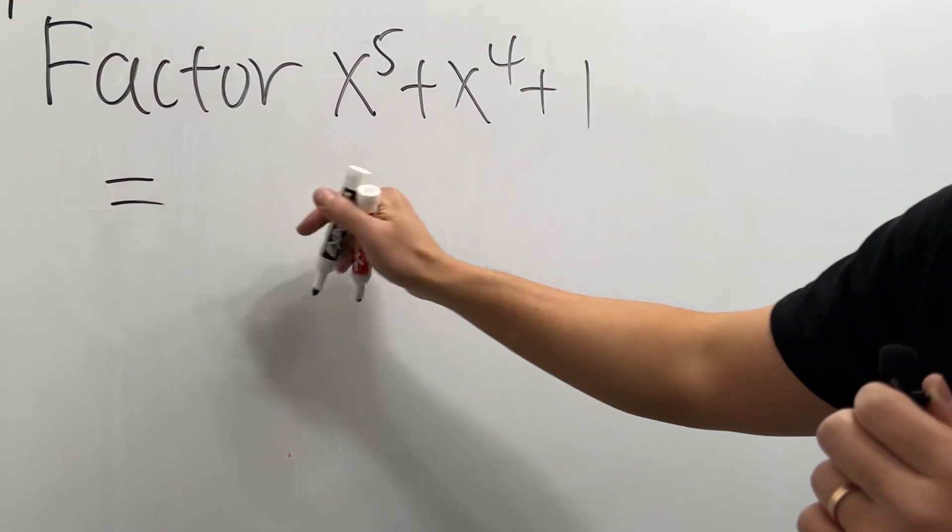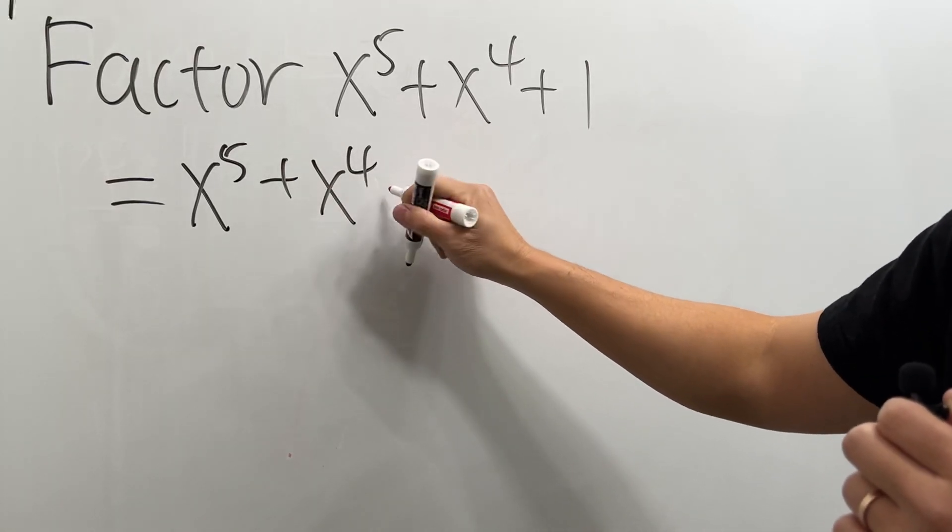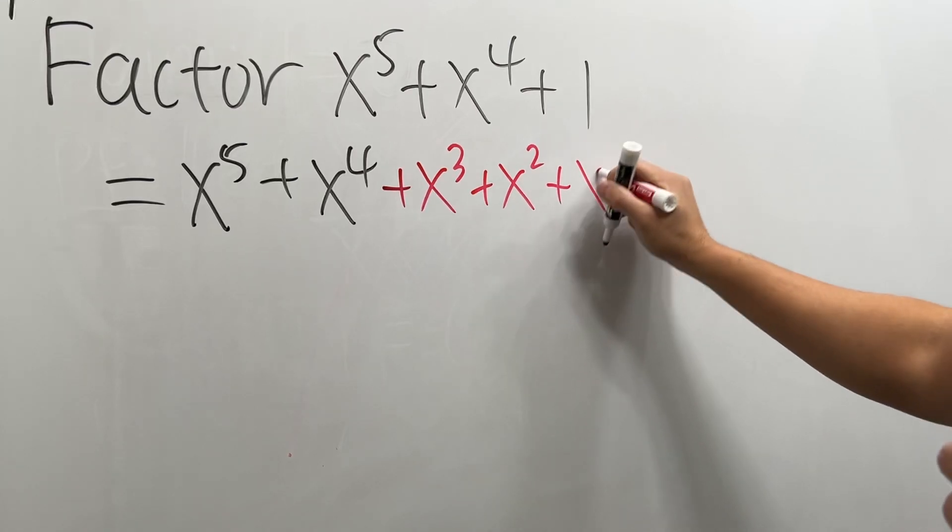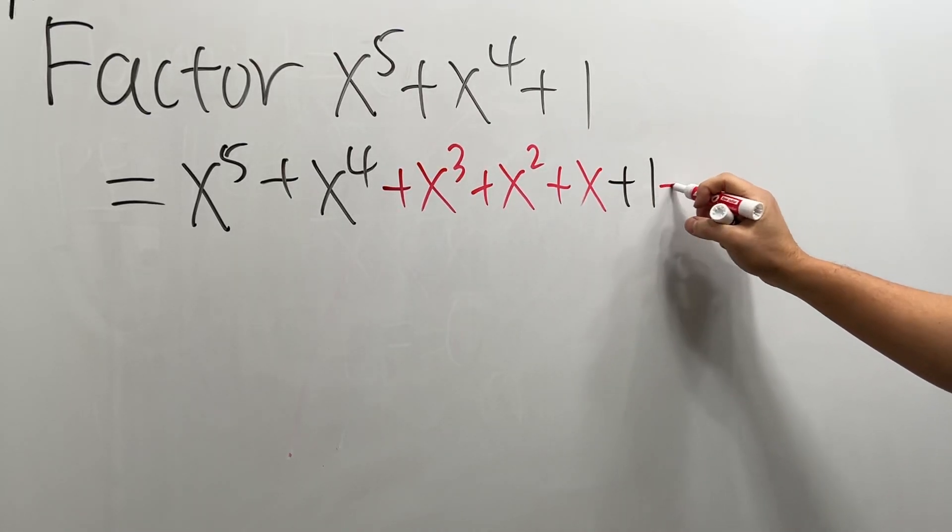Let's include all the powers. So I'm going to start with x to the 5th and then plus x to the 4th. And then I'm going to add x to the 3rd and then x to the 2nd and then plus x to the 1st and then plus 1. And then of course we add this right here.